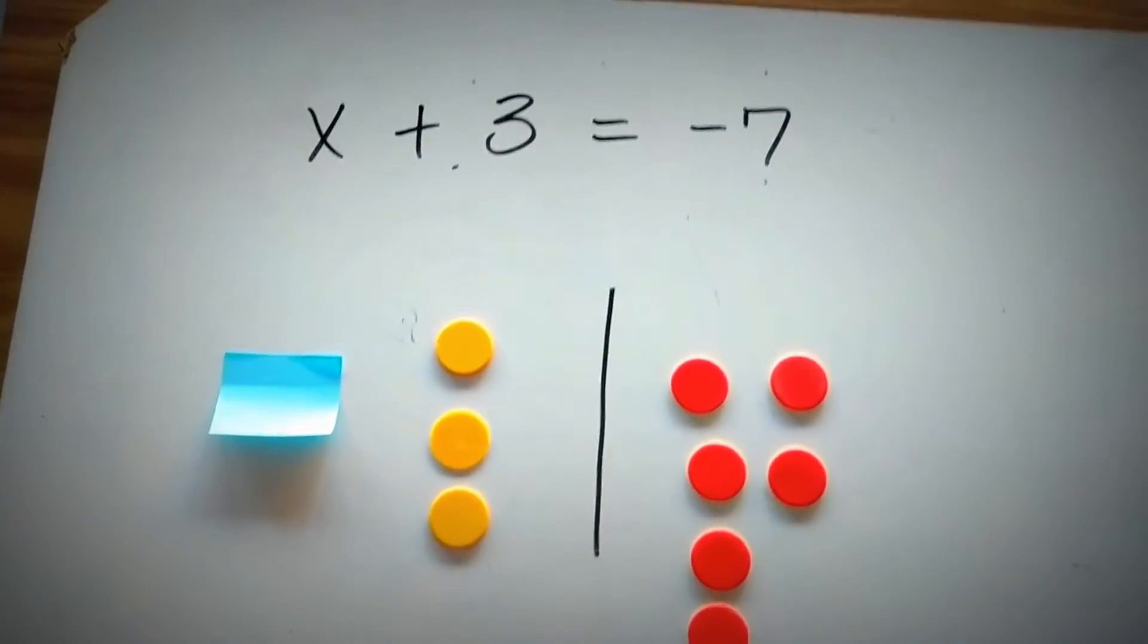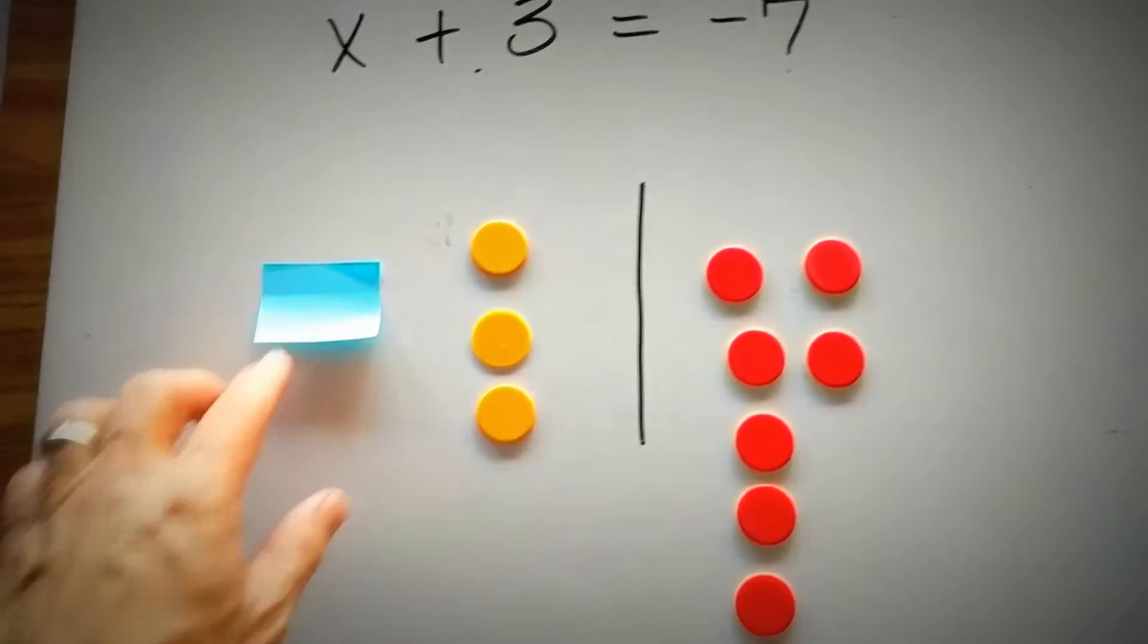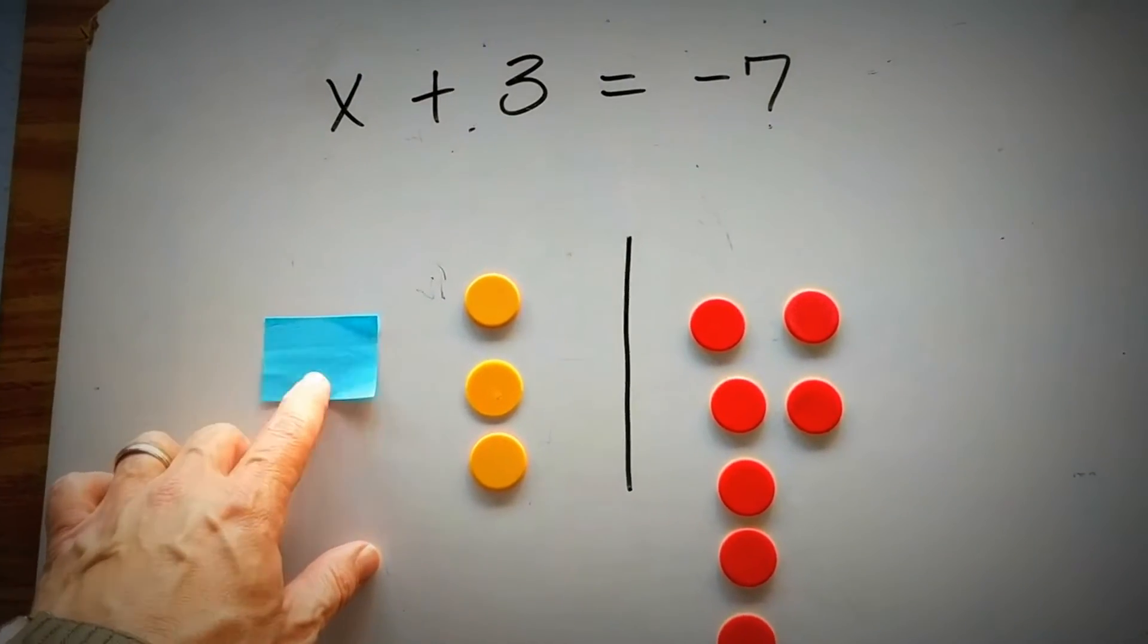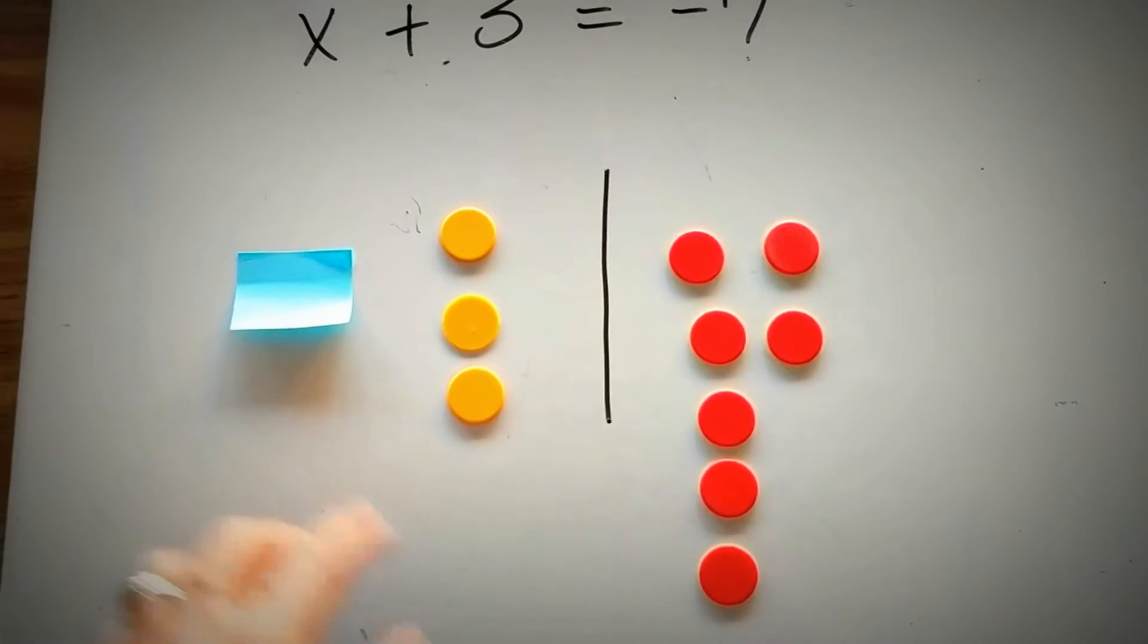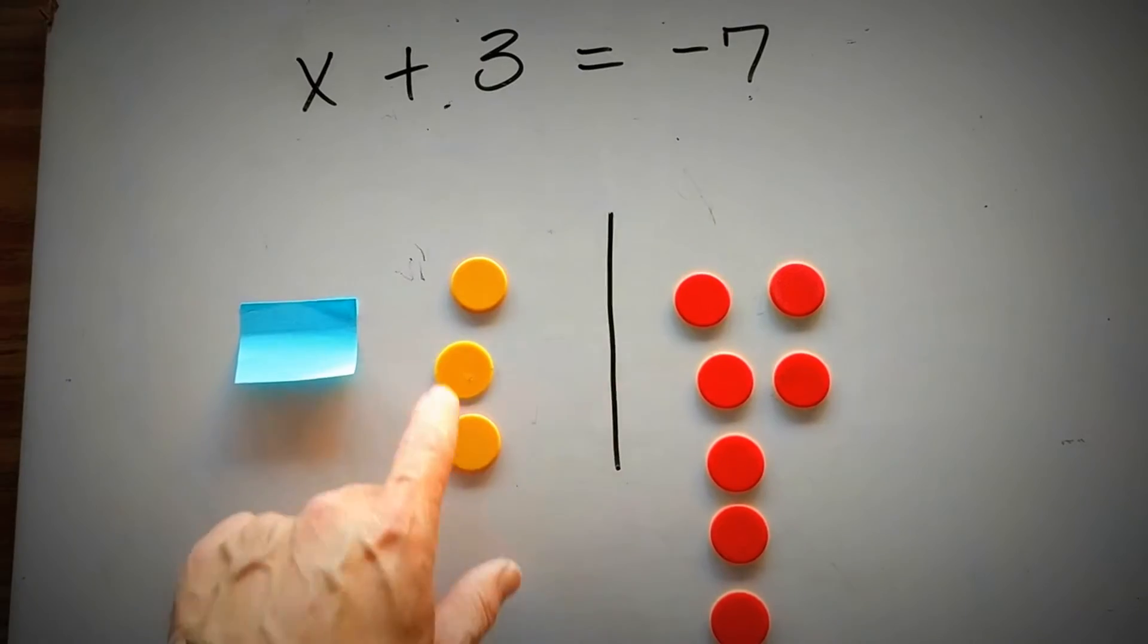Here we have x plus 3 equals negative 7, and I've already laid out some counters and a post-it to represent x as the variable. I need to get this post-it by itself, so I need to get rid of these counters.